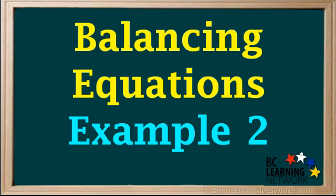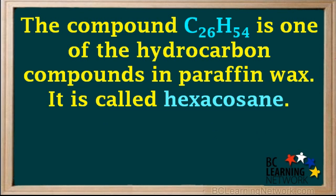This example will go through the steps in balancing an equation for the combustion of a hydrocarbon with 26 carbon atoms. The compound C26H54 is one of the hydrocarbon compounds found in paraffin wax. It is called hexacosane.